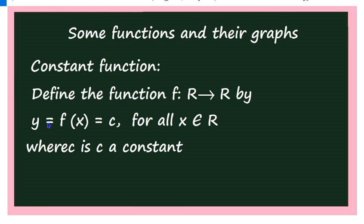For example, y = f(x) = 2.5 is a constant function. In general, the function f from R to R defined by y = f(x) = c, for all x belonging to R, is called a constant function. It is defined for all real numbers: f(10) = c, f(−1) = c, f(0) = c — for every real number, the value is always c.